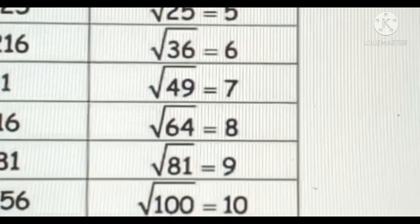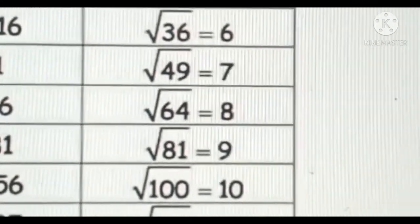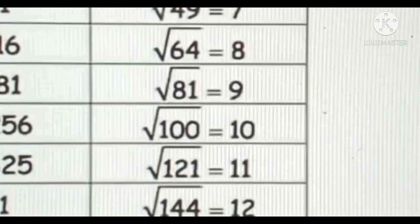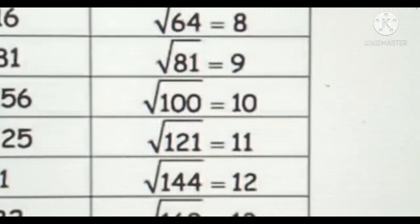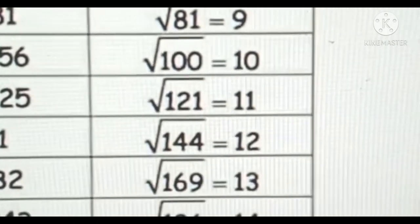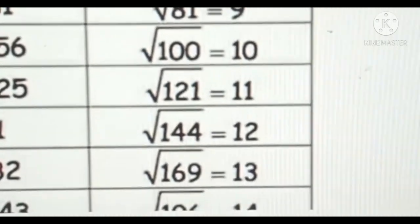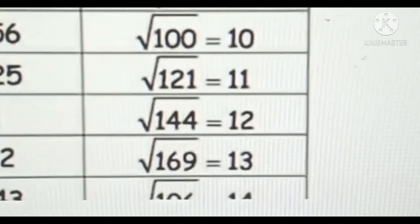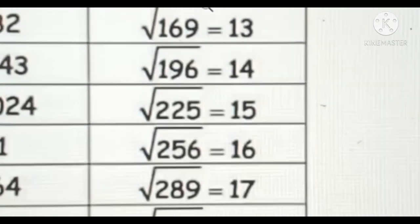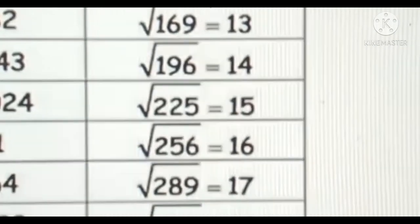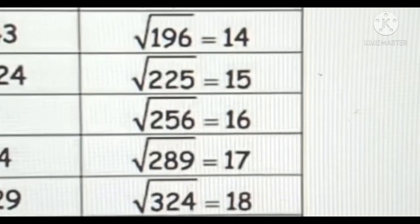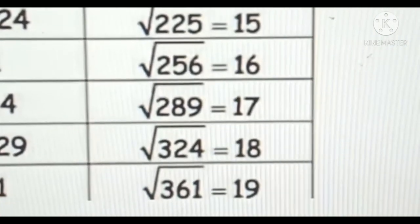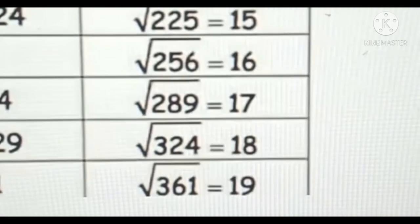Square root of 25 is equal to 5, square root of 36 is equal to 6, square root of 49 is equal to 7, square root of 64 is equal to 8, square root of 81 is equal to 9, square root of 100 is equal to 10, square root of 121 is equal to 11, square root of 144 is equal to 12, square root of 169 is equal to 13, square root of 196 is equal to 14, square root of 225 is equal to 15, square root of 256 is equal to 16.